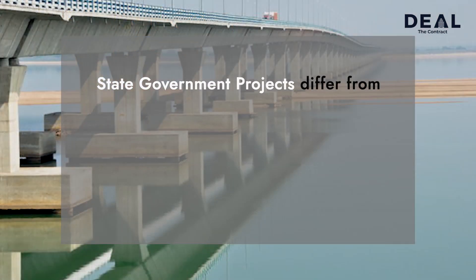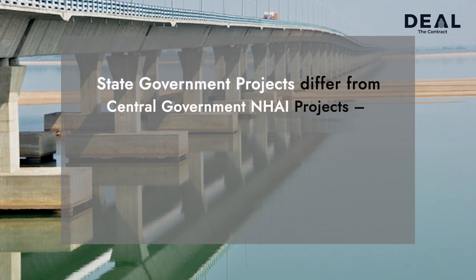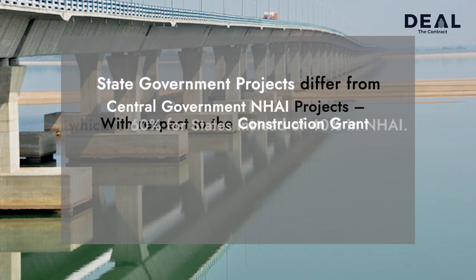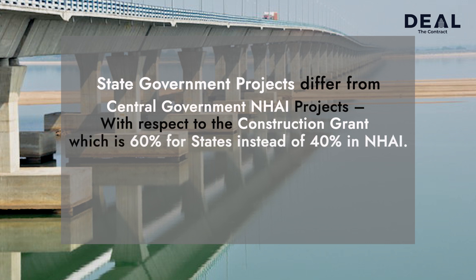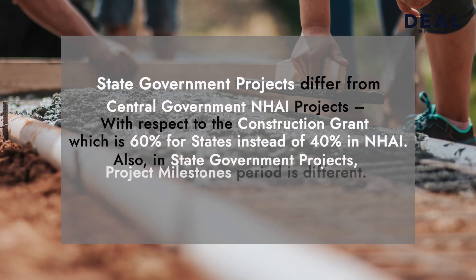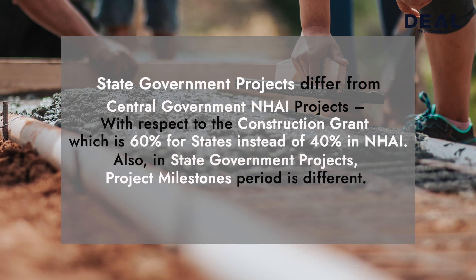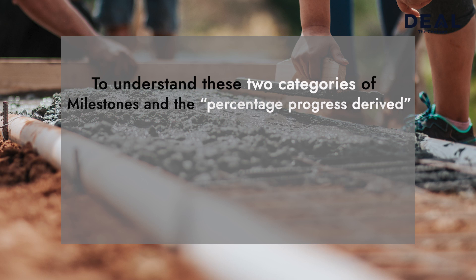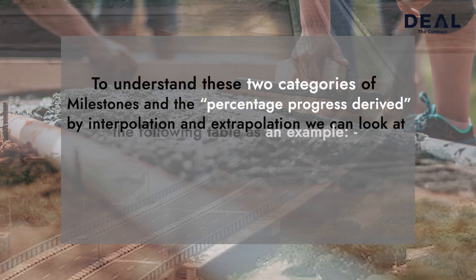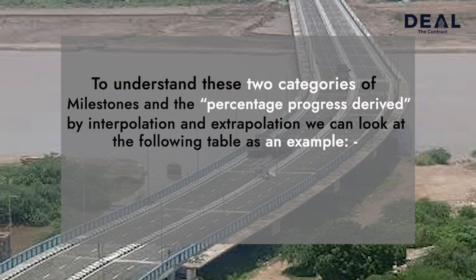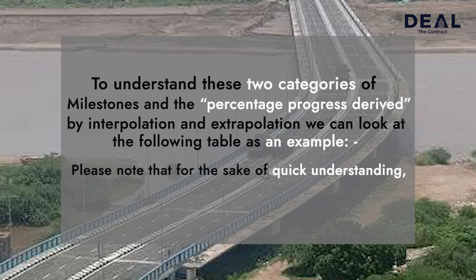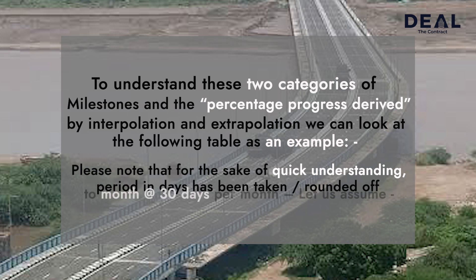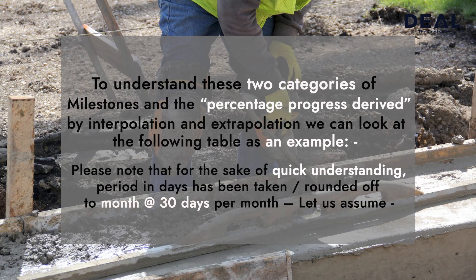State government projects differ from central government and NHI projects with respect to the construction grant, which is 60% for state instead of 40% in NHI. Also, in state government projects, the project milestone periods are different. To understand these two categories of milestones and the percentage progress derived by interpolation and extrapolation, we can look at the table as an example. The period in days has been taken and rounded off to months at the rate of 30 days per month.